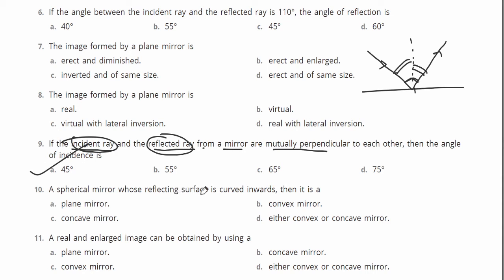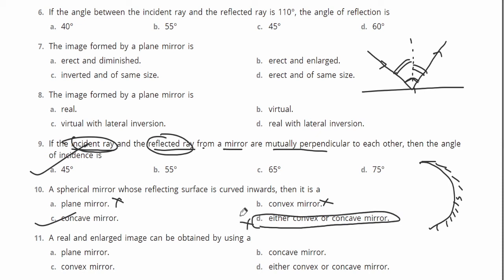A spherical mirror whose reflecting surface is curved inward is a concave mirror. For real image formation: a plane mirror cannot form a real image, so that option is cancelled. A convex mirror also cannot form a real image, so that option is cut. A concave mirror can form a real and enlarged image — that option is correct.